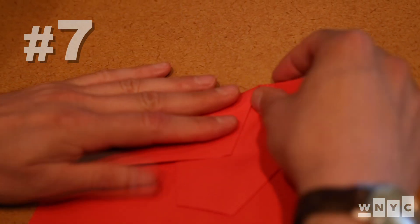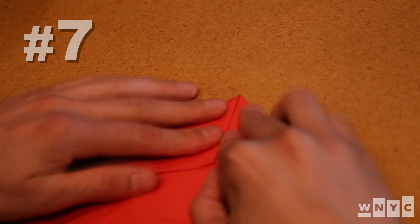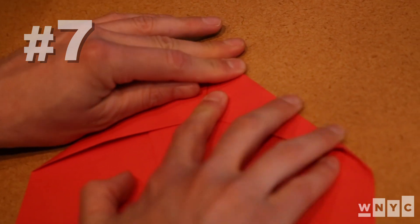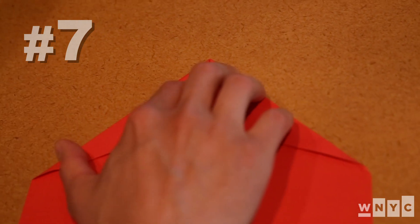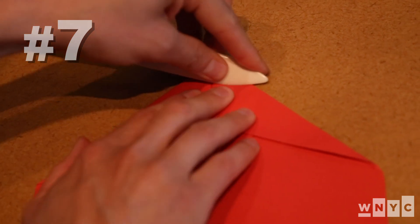Now comes my favorite fold. We're going to take the top two corners of the plane and bring them down so they meet in the middle. Now it's going to actually start looking like a paper airplane.